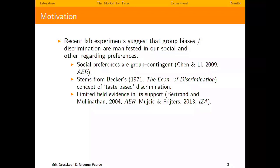The Bertrand-Mullainathan study is a correspondence study where they manufacture CVs — they're made up but identical except they have either an African-American sounding name or a white American sounding name. They send them out and look at callback rates from employers. They find that white American sounding names get more callbacks. I'll come back to the Neumark and Fridges study when I discuss ours.